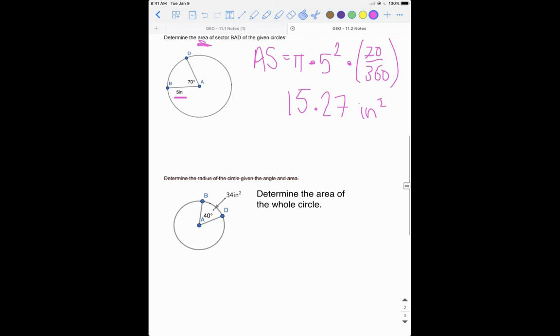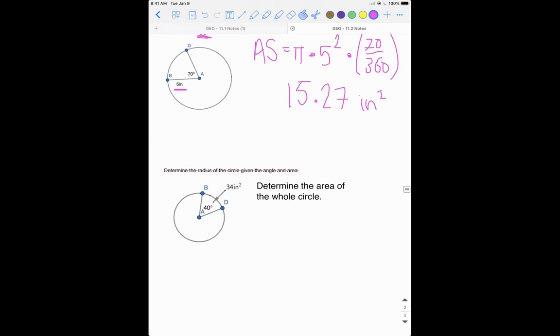All right, so now we are given the area of our sector. We're given this area. How do we know it's area? One thing that sticks out is our units—we have inches squared. If we look at this, we want to determine the area of the whole circle, not just the sector, but we want to use that sector. This is very similar to what we did when we were doing arc length stuff on Monday.